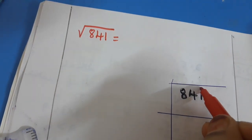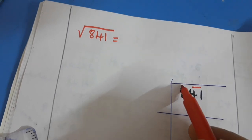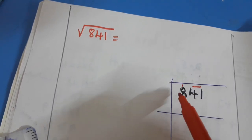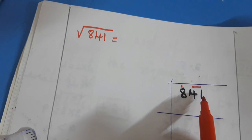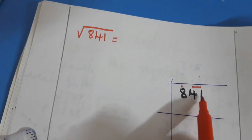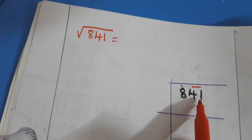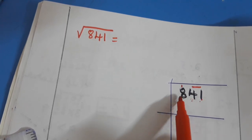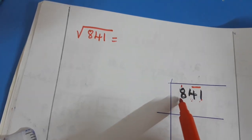First step is to group from the ones place — two numbers form one group and eight is one group. So grouping is done from the right side, making pairs of two digits. This is one pair — very important. Now we have to check in square numbers which square we get nearer to eight.